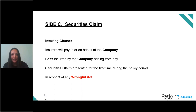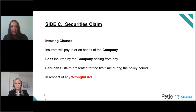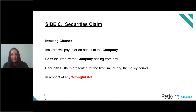Side B cover reimburses the company to the extent that it grants indemnification and advances legal fees on behalf of directors and officers. Insurers will pay to or on behalf of the company loss incurred arising from any claim for any wrongful act where an insured person has been indemnified for that loss. It protects the company's corporate assets at risk as a result of an indemnification agreement with an insured director or officer. The insured is the company itself and there is usually a retention applicable.